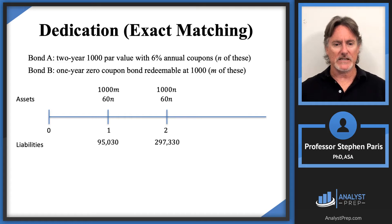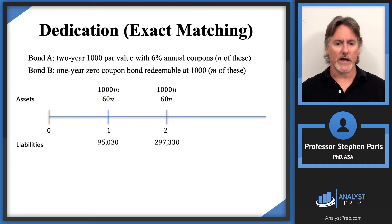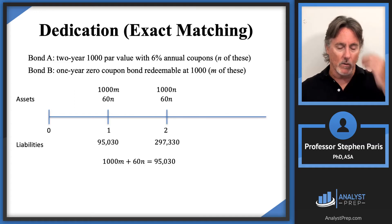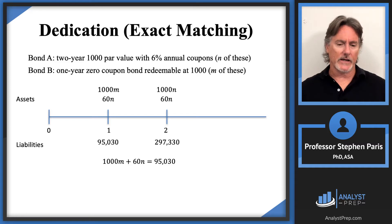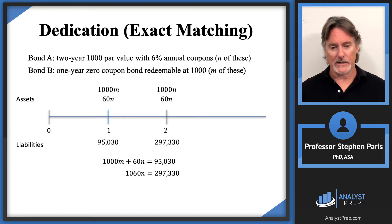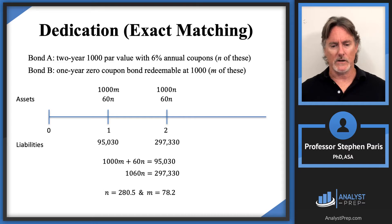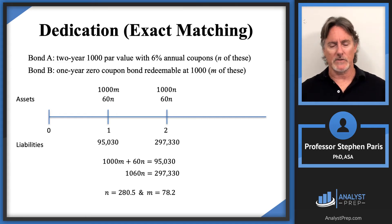Adding up total assets at each time and setting them equal to the corresponding liability gives: at time one, 1,000m + 60n = 95,030; and at time two, 1,000n + 60n = 1,060n = 297,330. Solving this system is straightforward — dividing the second equation by 1,060 gives n = 280.5.